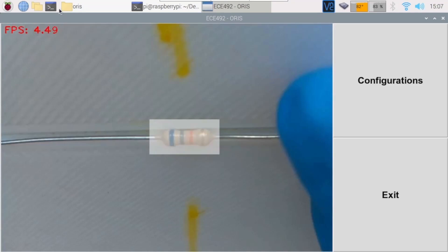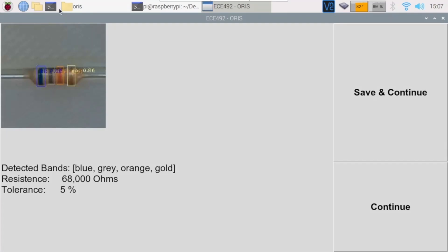After the success of detecting the resistor, we will have two options on the edge. We can choose either to save the detection result and continue to scan the next resistor, or just continue without saving. Next, I will show you the usage of ORIS.